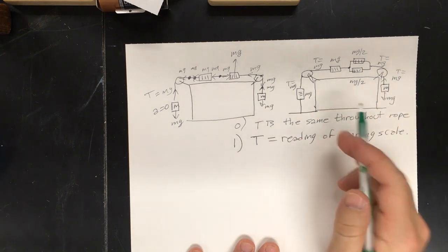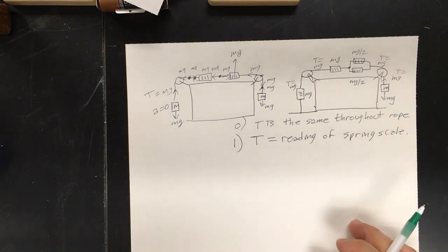T is the same throughout the rope or string. So, in other words, if it's T here, it's T everywhere. Now, in a real string, that's not true, but we're going to pretend they're really light, etc.